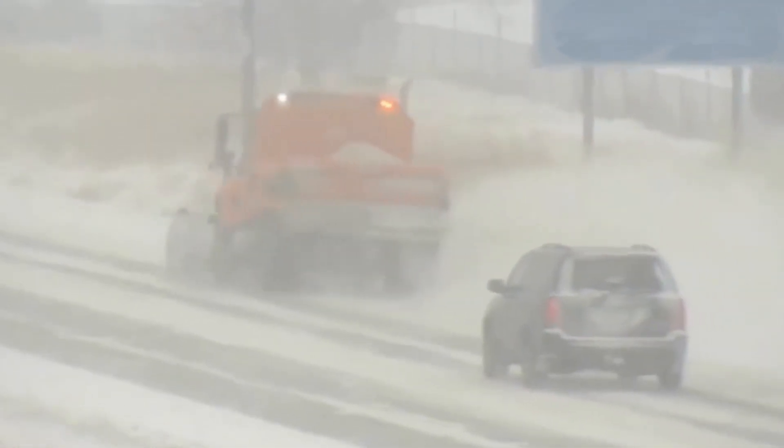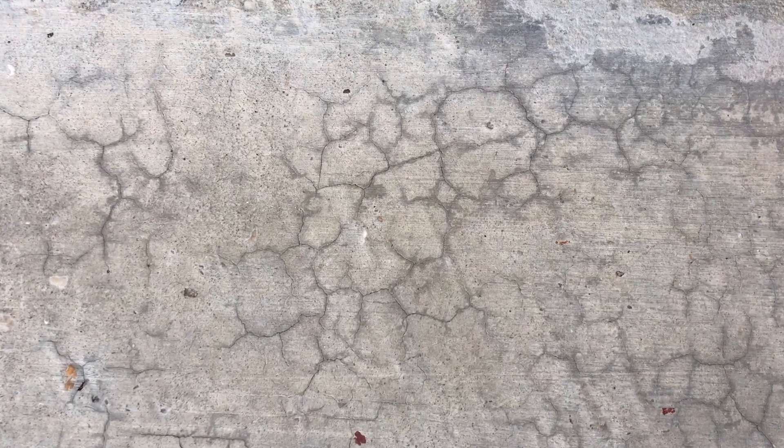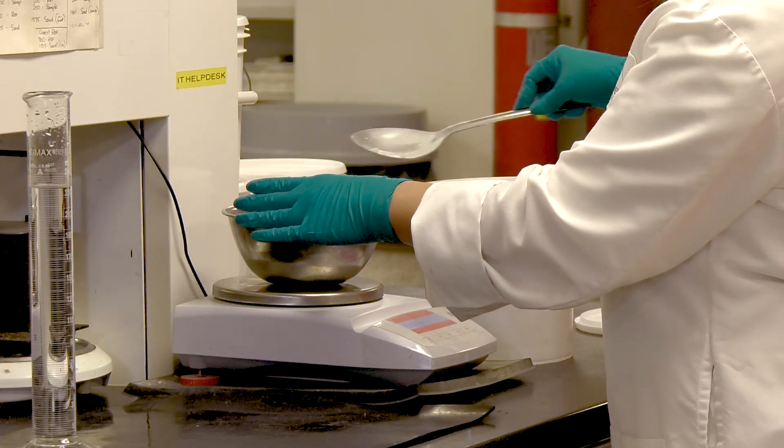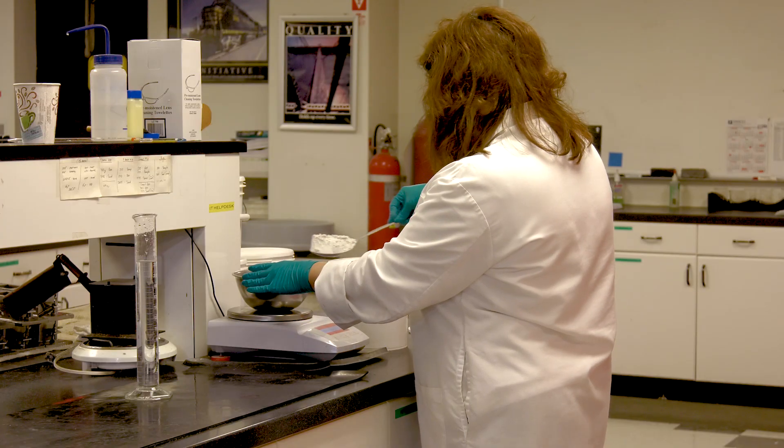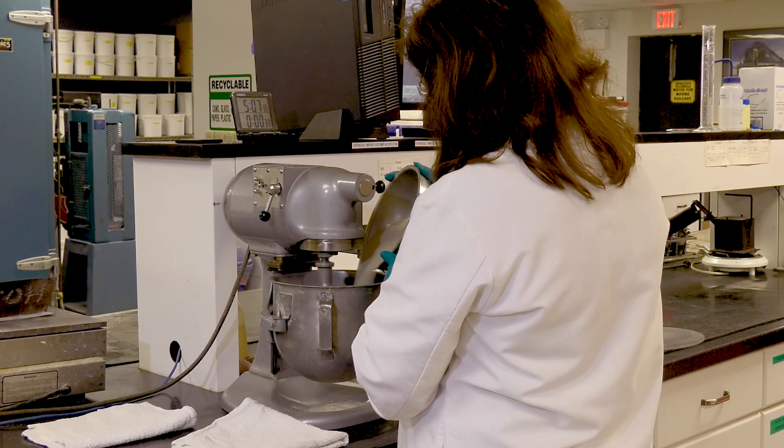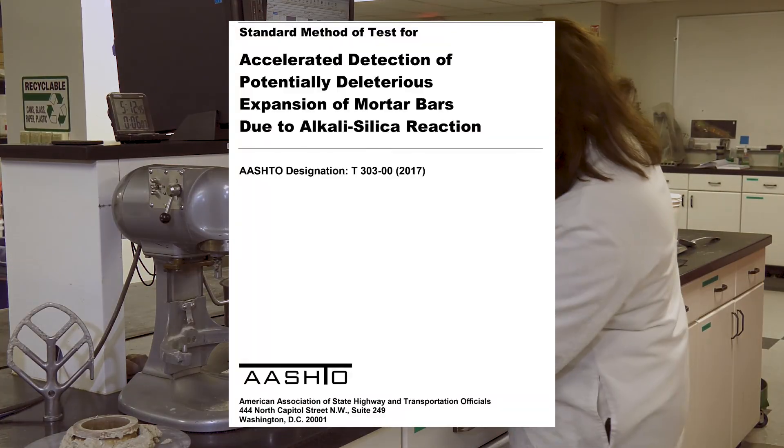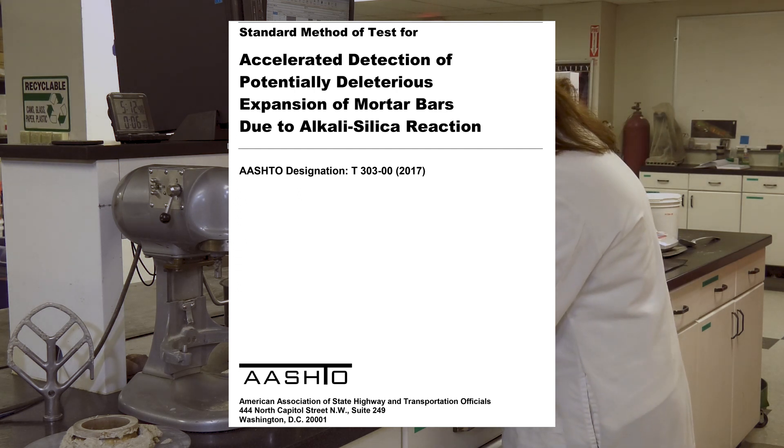Chemical durability problems can occur due to reactions between the aggregate and other materials, such as components of cement. The reactivity is potentially harmful only when it produces significant expansion and related cracking. A majority of chemical durability problems result from a reaction between reactive silica in the aggregates and alkalis in the cement. An aggregate's susceptibility to this durability problem, called alkali-silica reaction (ASR), can be evaluated using AASHTO T303 and other ASTM standards.